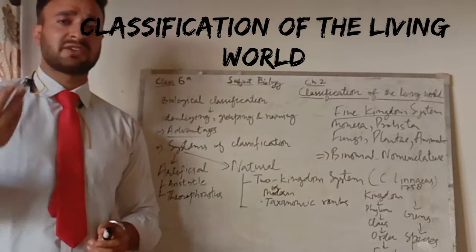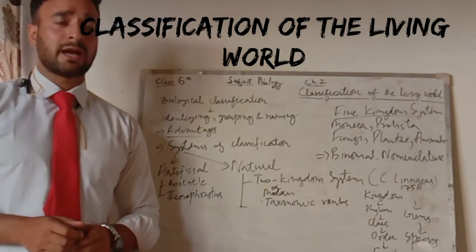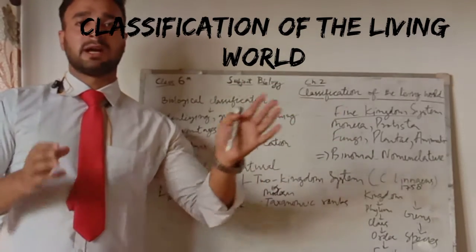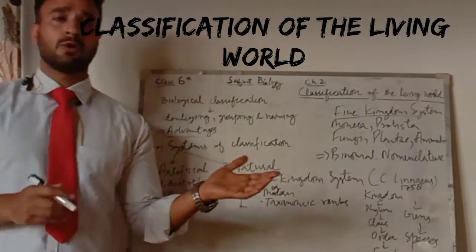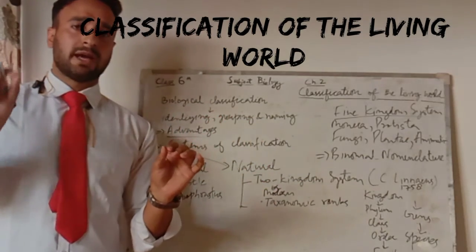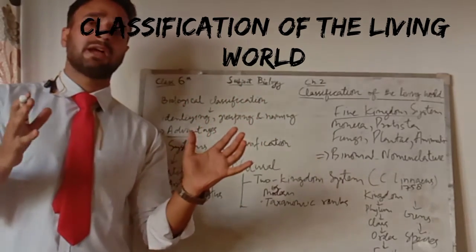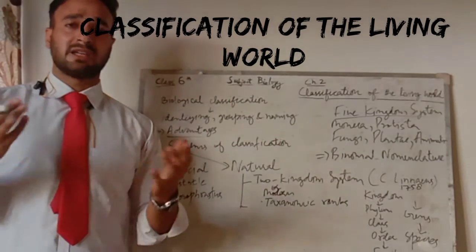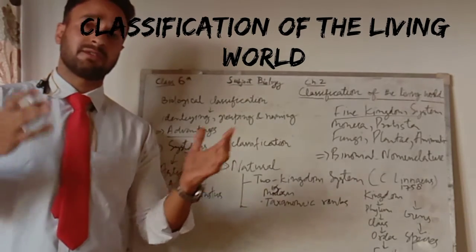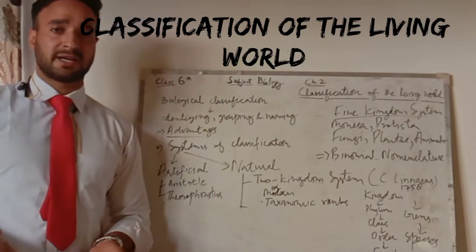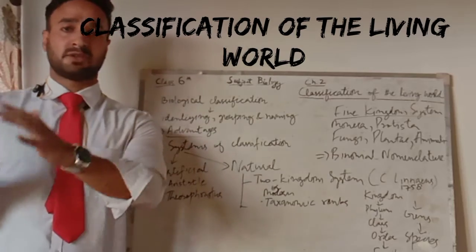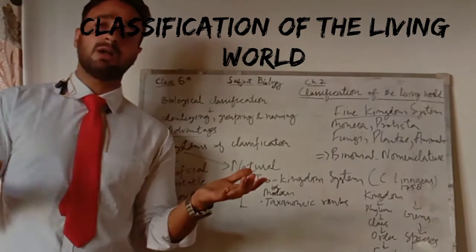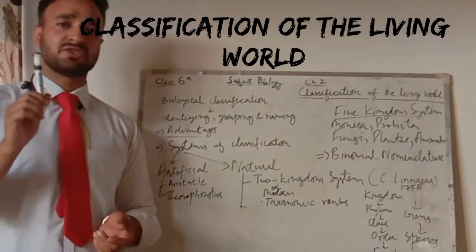The second advantage is that it helps in the generalization of characters. For example, if I put the bulbul, parrot, and pigeon in the section Aves — that is, birds — most of the characters they have are the same: they fly in the air, they have hollow bones, they are light in weight, and they have feathers to fly. So I do not have to remember the characters of the pigeon only; I can remember the characters of any bird, and those characters are similar in all bird species. So it helps in the generalization of characters.